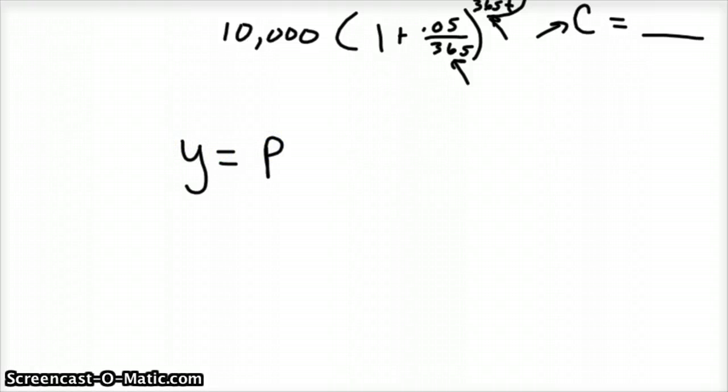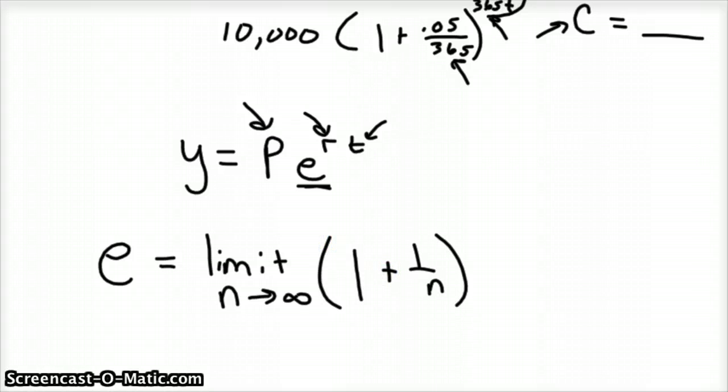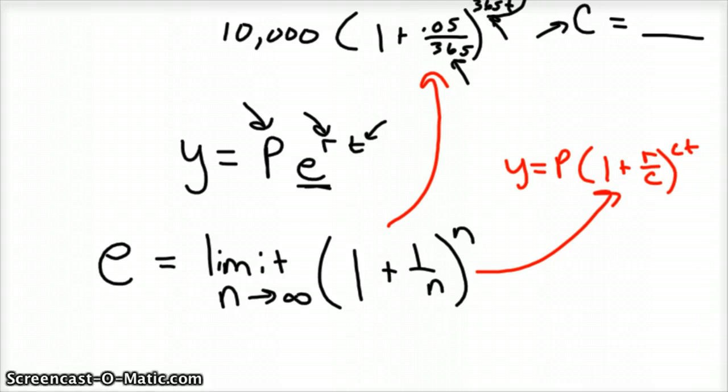y equals p times e to the rt, where p is your initial amount, r is your growth rate, and t is your time. But this number e is called the Euler number. And e is defined this way. It's the limit as n approaches infinity of 1 plus 1 over n to the nth power. So I hope you see the resemblance here of, remember compound growth, y equals p times 1 plus r over c to the ct. And you can kind of see the connection between the two.